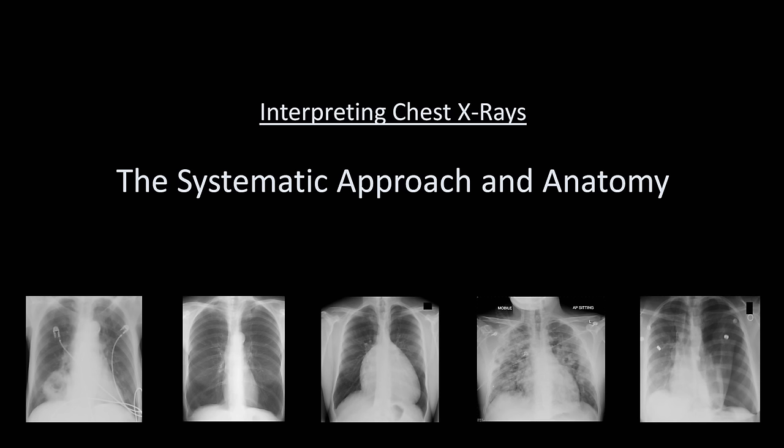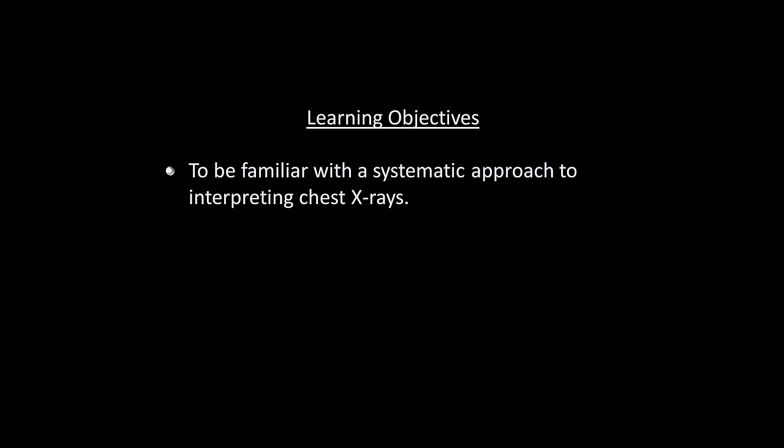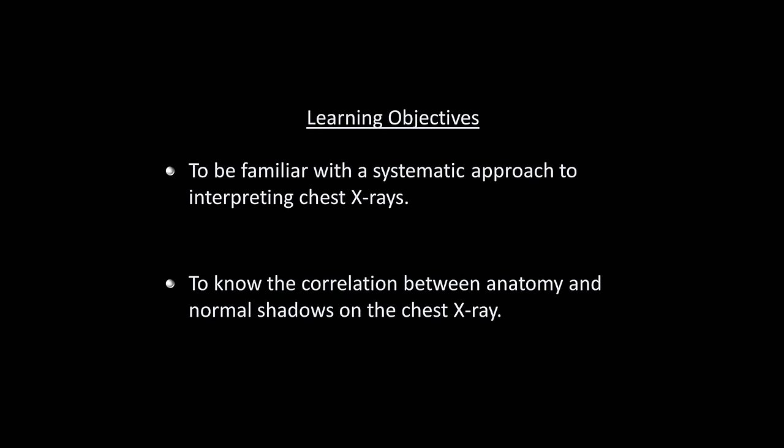Hello everyone. This is the second video in this series on interpreting chest x-rays. The topic is the systematic approach and normal chest x-ray anatomy. The learning objectives of this video are to be familiar with the systematic approach to interpreting chest x-rays and to know the correlation between anatomy and normal shadows on the x-ray.